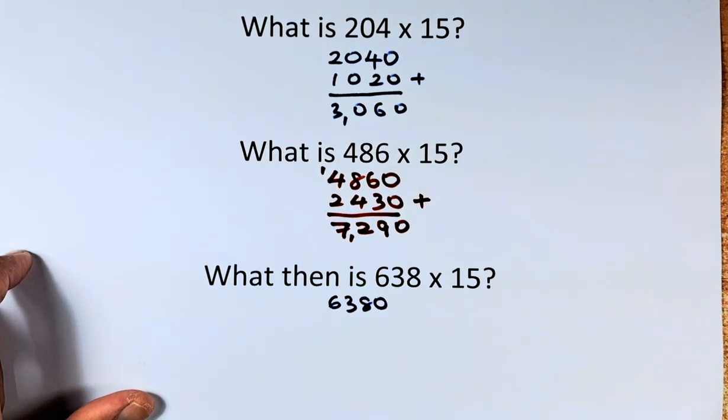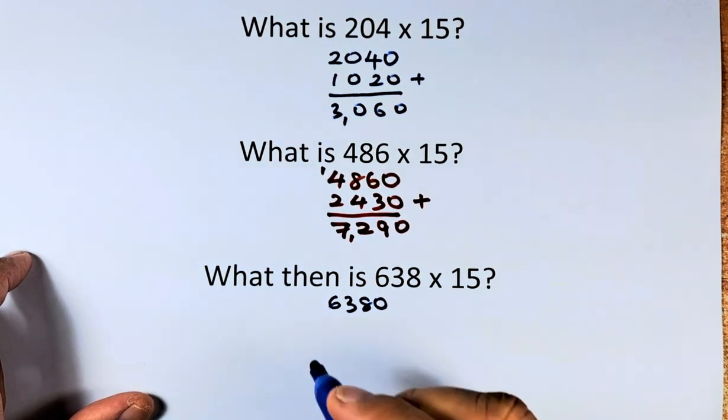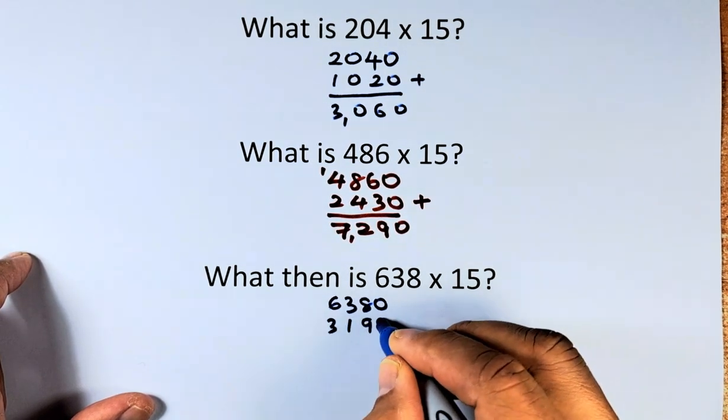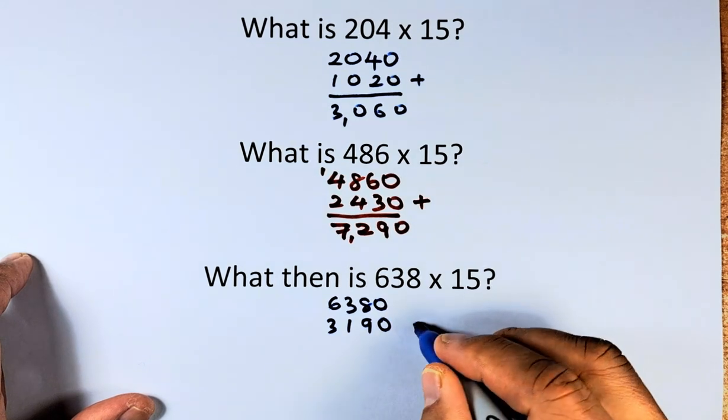Then we half the number. Half of 6380 is 3190.